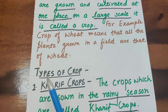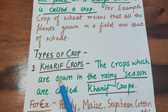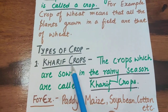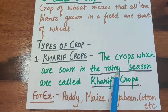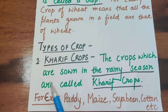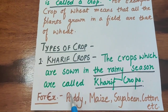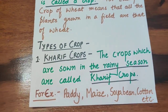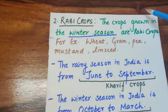After understanding the definition of crop, we should note the types of crops in India. We have Kharif crops and Rabi crops. Kharif crops are the crops sown in the rainy season — the monsoon season. Examples of Kharif crops are paddy, maize, soybean, cotton, etc.